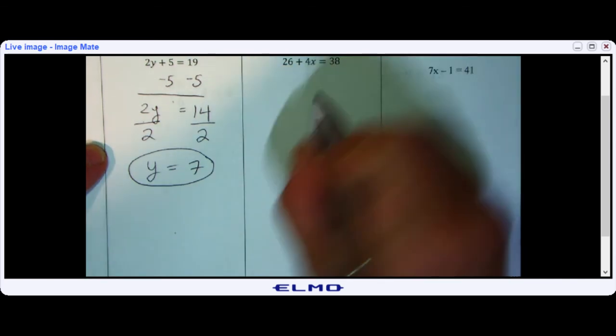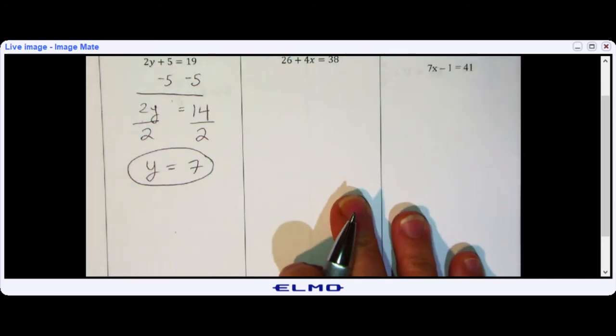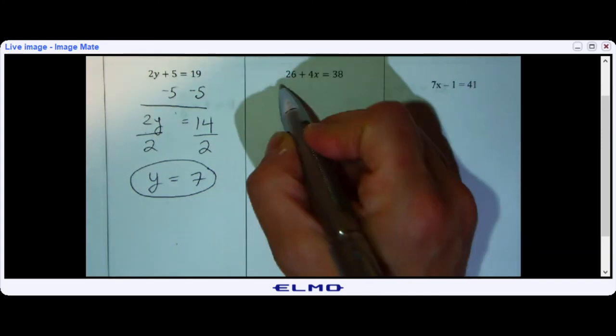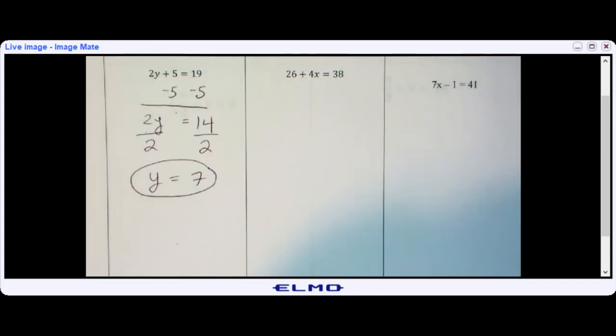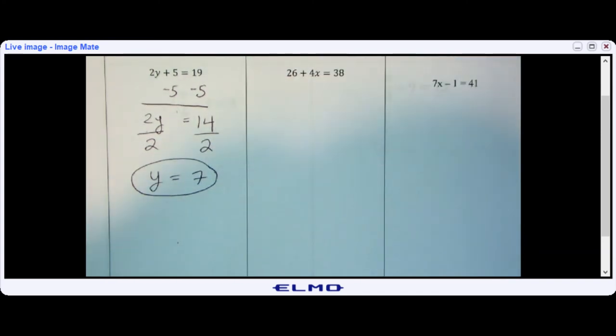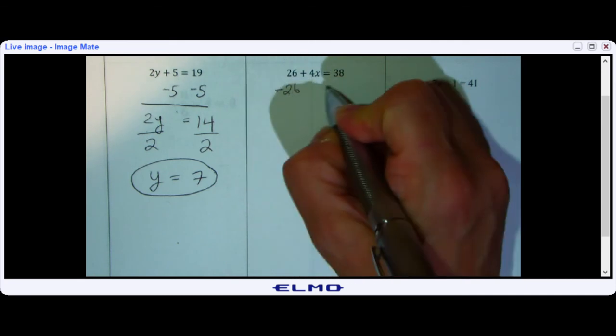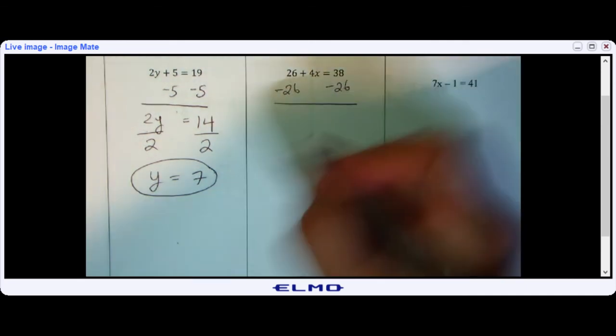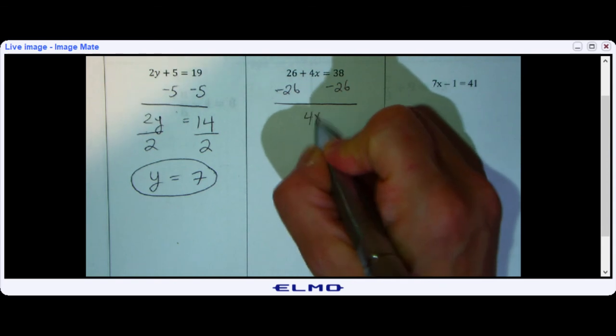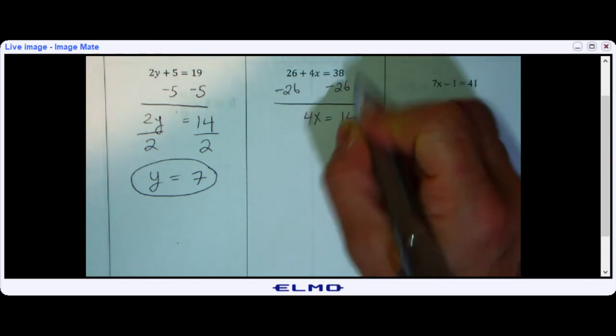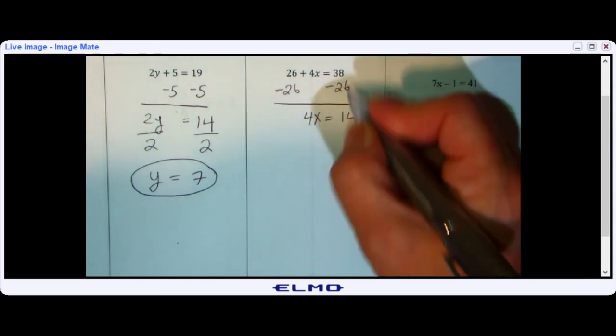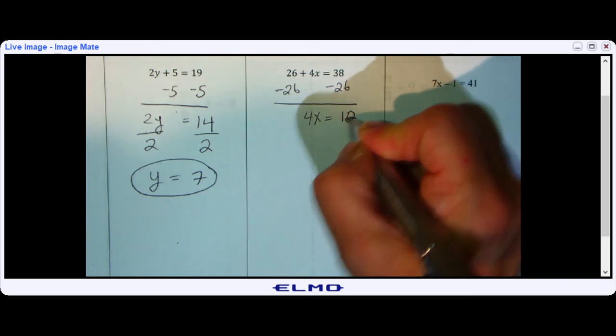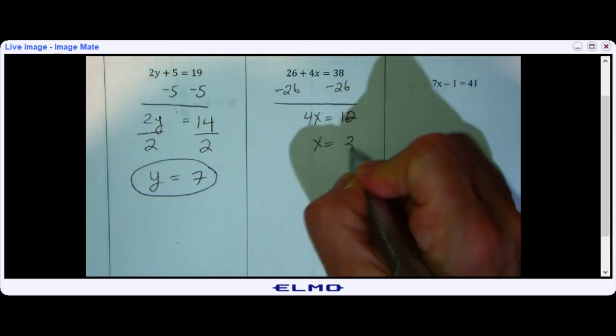My next one is the same deal but with larger numbers. You want to start off by adding or subtracting the number. I'm going to subtract 26 from both sides. I end up with 4x is equal to 12, so x equals 3.